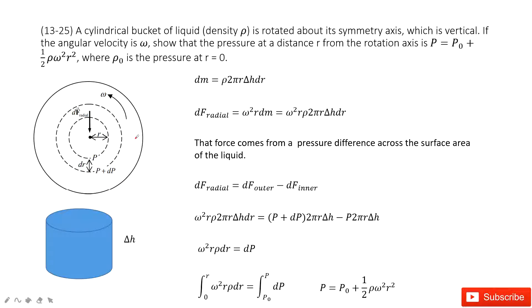Chapter 13 is about fluids. We can see a cylindrical bucket of liquid, looks like this one with an edge, the height delta h, and also it rotates around angular velocity omega in this way.